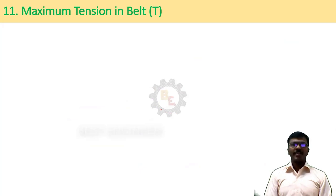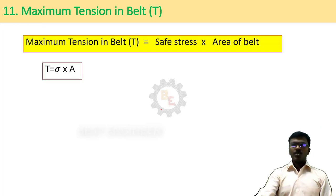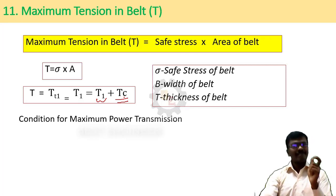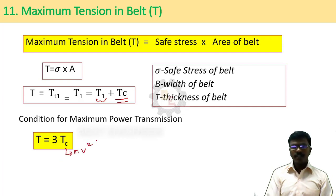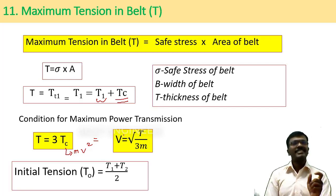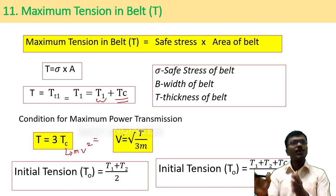Eleventh step: find the maximum tension. The formula is T_max = σ × A (stress × area of the belt). If centrifugal tension is given, it must be included. For maximum power transmission, the maximum tension should equal 3 times the centrifugal tension, which gives v = √(T / (3m)). For initial tension, it should be the average of the tight side and slack side tensions. If running the belt at more than 10 m/s, centrifugal tension must be added, and the initial tension must be maintained including that centrifugal tension.